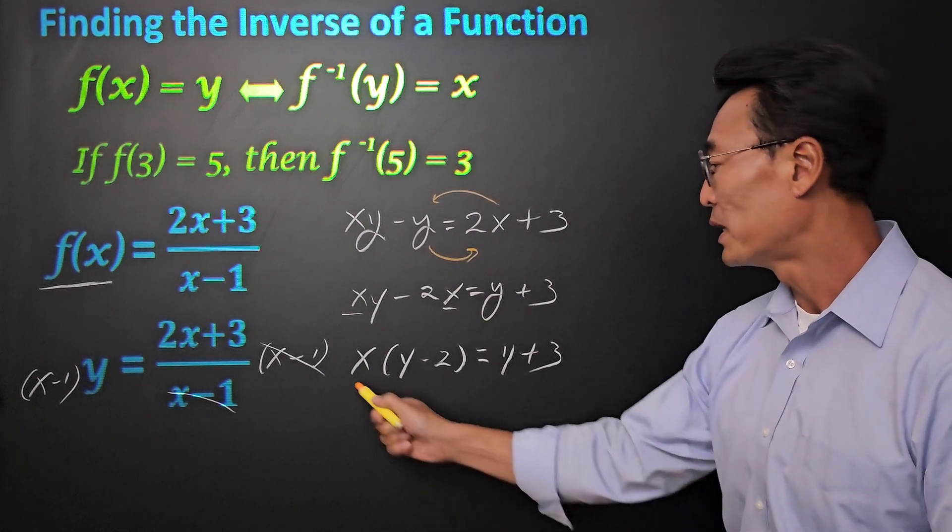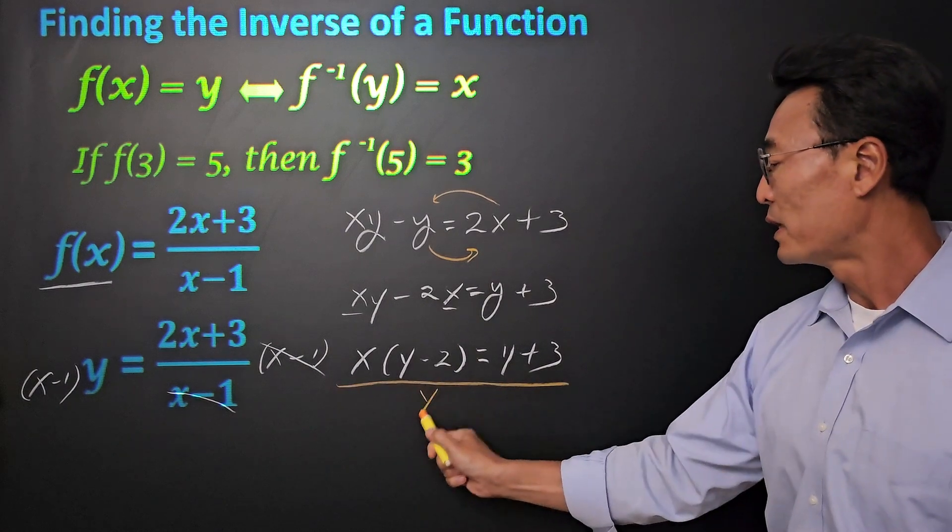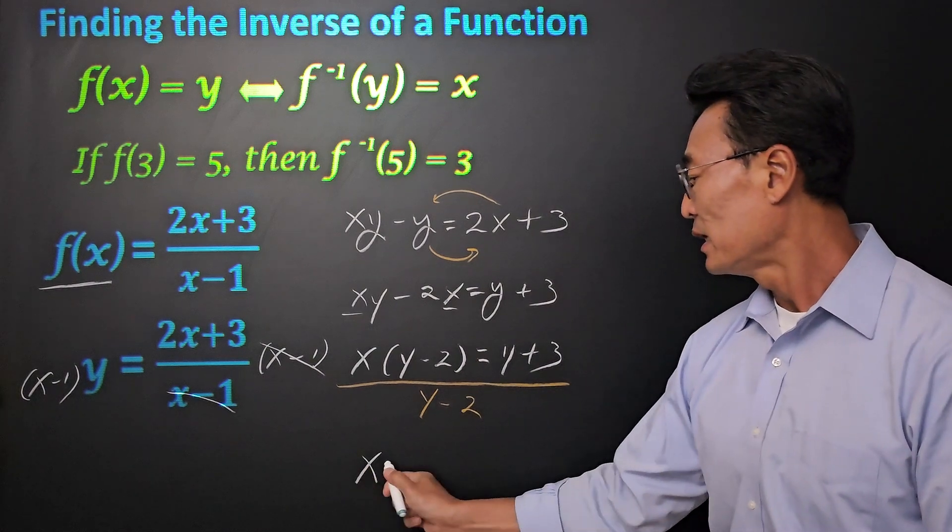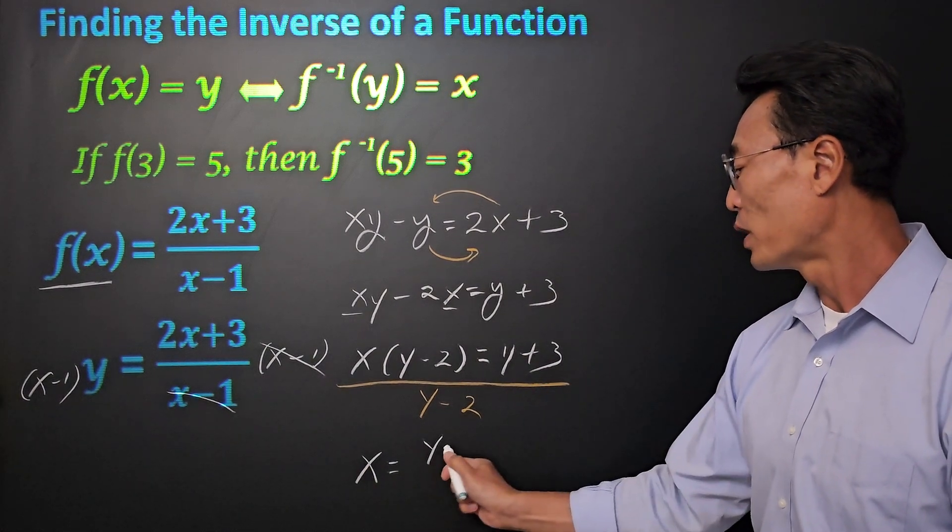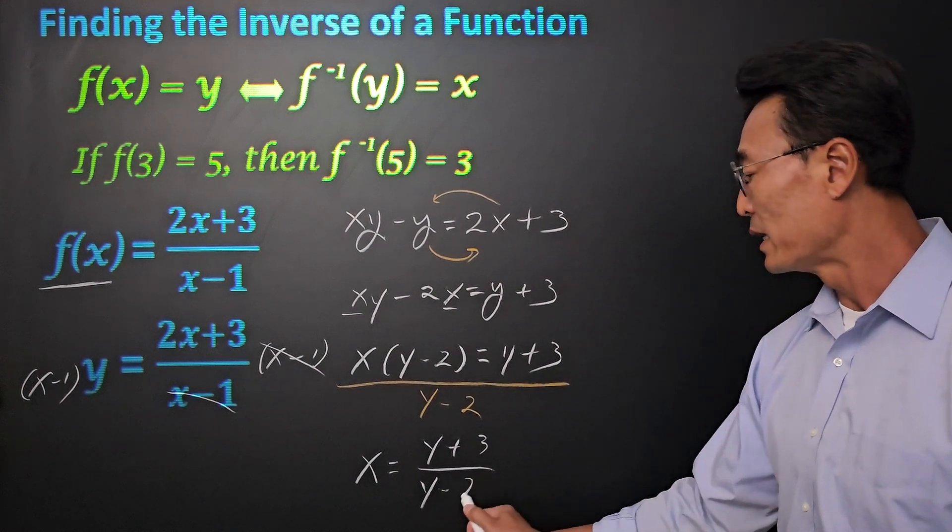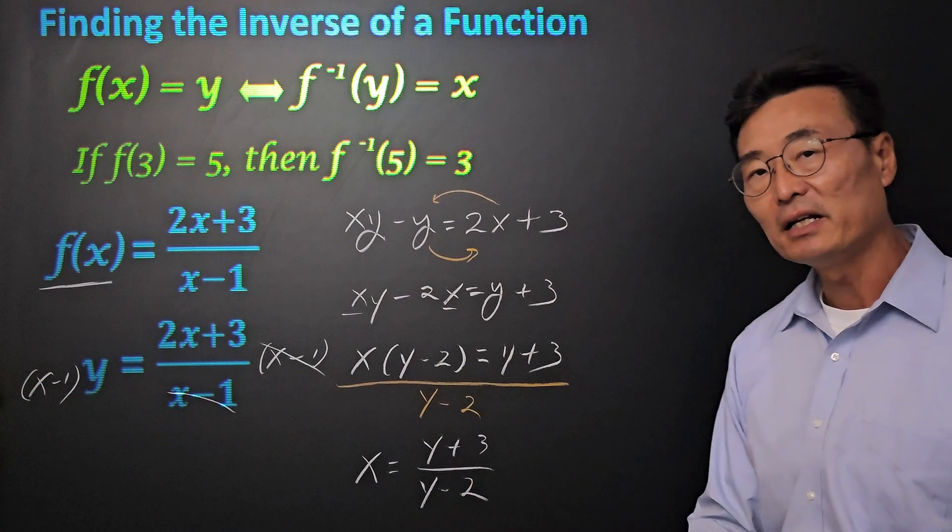Next, we want to divide by y minus 2 on both sides of the equal sign where we get x equals y plus 3 all over y minus 2.